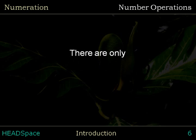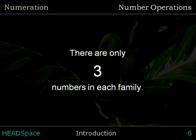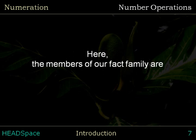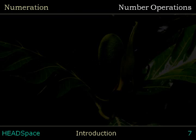There are only three numbers in each family. Here, the members of our fact family are 2, 3, and 5. How are they related?